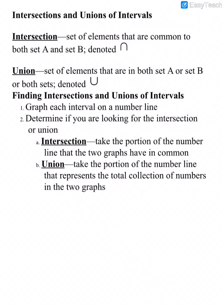An intersection is a set of elements that are common to both set A and set B, denoted with the symbol that looks like an upside-down U. One memory trick: that symbol looks like an N — intersection. The intersection means elements that are in both A and B, and another way to remember it is that the word 'and' has an N in it, and that symbol means 'and.'